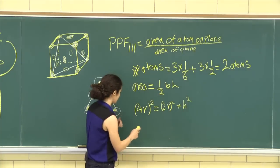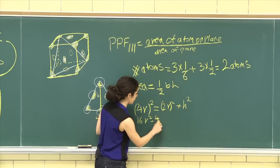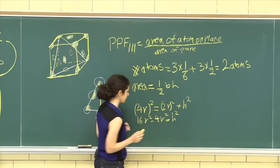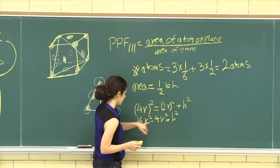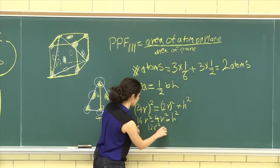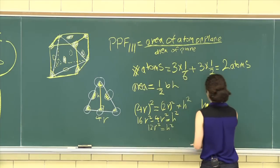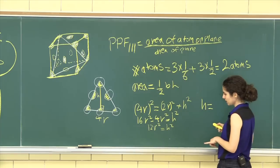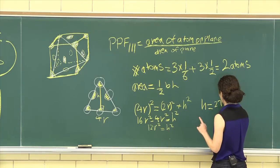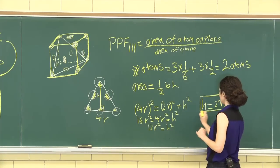So we crunch these numbers. 16r squared minus 4r squared is equal to h squared. That would be 12r squared is equal to h squared. Our h in turn is equal to root 12, which is 2 root 3r. So we have our h, perfect.